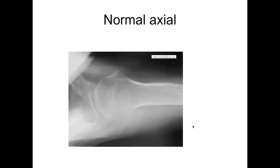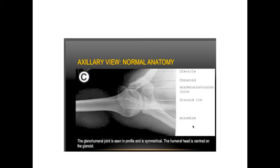Your axial view is really critical because in some dislocations you may not see it on a wide view. This is just pointing out what the different bones are on this axillary view. Here's the glenoid — sometimes it's hard, you really have to look to find this. Here's the clavicle coming in, and then your coracoid is up here. When looking at the axial view to tell anterior from posterior, just remember the coracoid is anterior.